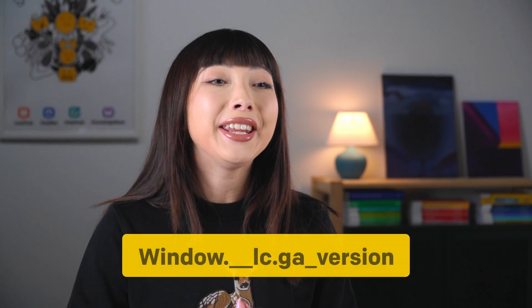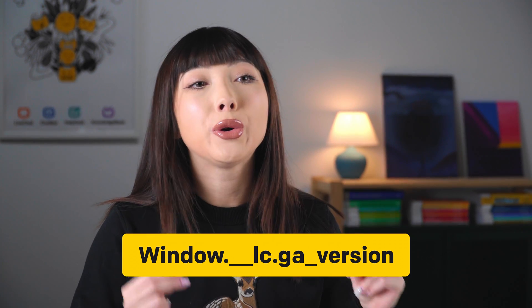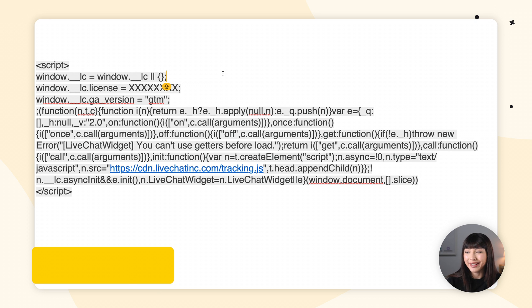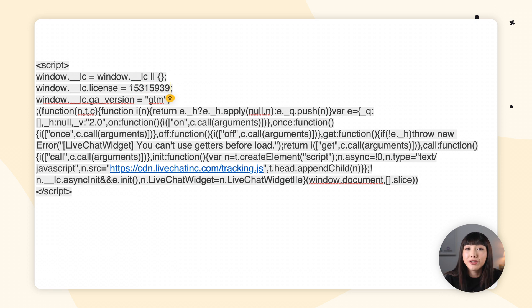Suppose you're using several different versions of the Google Analytics code. In that case, you can let Live Chat know which version to use for the integration. You can do that by adding the following parameter to your Live Chat tracking code under your license number on your website window. Since we are integrating Google Tag Manager with Google Analytics, we want to use the parameter GTM, which also goes under your license number. Here's an example of the Live Chat tracking code with the additional parameter added. You can copy this code into a text editor and replace the X's with your license number, then paste this code before the body tag. I'll leave this code in a link in the description for you.